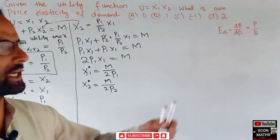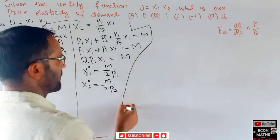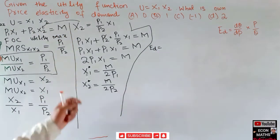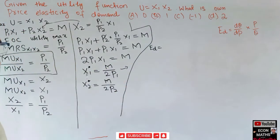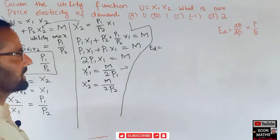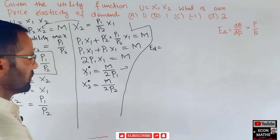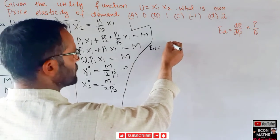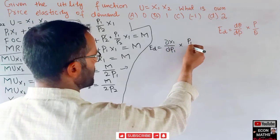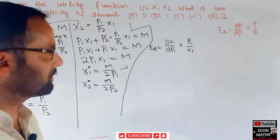Now we can use the price elasticity of demand formula on this demand function. Elasticity of demand requires us to find dx1 divided by dp1 times p1 divided by x1. Using this formula, in place of q we have x1. We need to differentiate the demand function x1 = m/(2p1) with respect to p1.